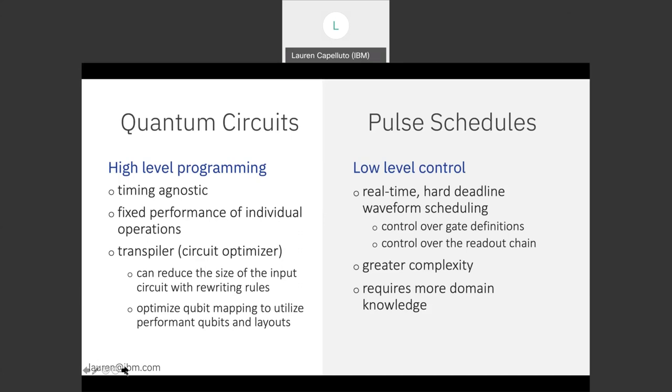Sometimes we want more control, fine-grained control over what the hardware is going to do. And this is where pulse schedules come in. So this lower level control means that now those black box operations of gates and measurements on the circuit level become transparent. So if we want to improve the performance of an individual gate potentially through pulse waveform shaping that is possible at this level.